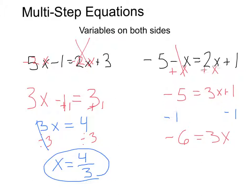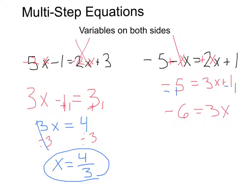Let's give ourselves a little bit more room here. Negative 6 equals 3x. I'm going to go ahead and divide by 3, divide by 3. And I'm going to be left with x equals, those 3's are going to cancel, negative 6 divided by 3, negative 2.